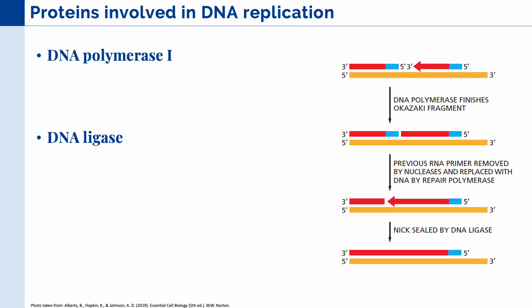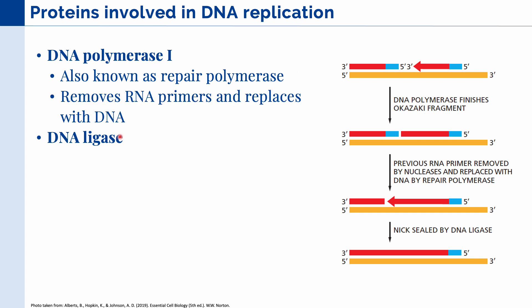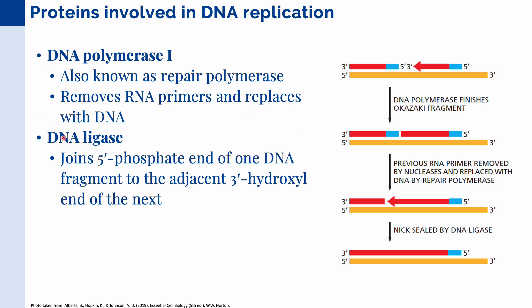Other proteins involved in DNA replication are most active in the lagging strand. First, DNA polymerase 1, also known as repair polymerase, removes the RNA primers and replaces them with DNA at the different Okazaki fragments. So here we have two Okazaki fragments, both starting with RNA primers — DNA polymerase 1 removes these and fills in the gap with DNA. But there is still a cut between the two fragments, so the next protein, DNA ligase, joins the 5' phosphate end of one DNA fragment to the adjacent 3' hydroxyl end, connecting the two fragments into one whole new DNA strand.